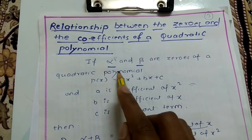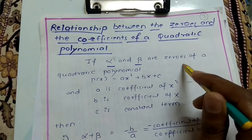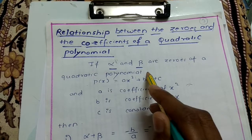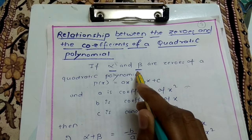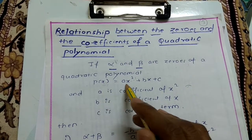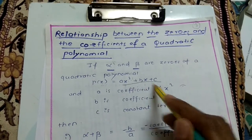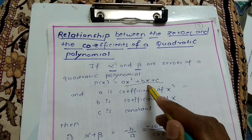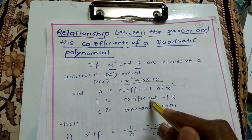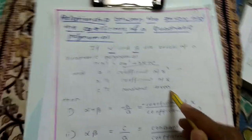So let us start. If alpha and beta are zeros of a quadratic polynomial, these two symbols are used to denote the zeros. A quadratic polynomial is a polynomial with degree 2. Here I have taken the polynomial in terms of x — this is the general form: ax squared plus bx plus c, where x is the variable, a is the coefficient of x squared, b is the coefficient of x, and c is the constant term.